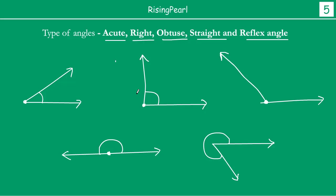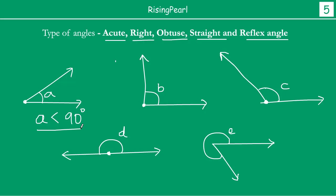Now friends, these are all angles. So let us call this A, let us call this B, let us call this C, D, and let us call this E. Let us assume that these letters represent the measure of each angle. So if A is less than 90 degrees, we call this an acute angle.